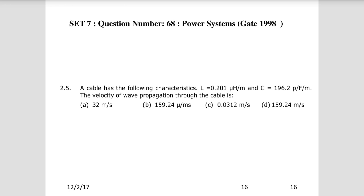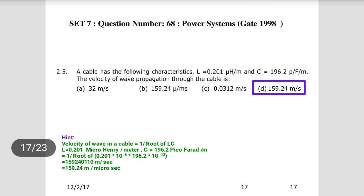Question 8: A cable has given values of inductance L and capacitance C per unit length. Find the velocity of wave propagation through the cable. The velocity of wave propagation equals 1/√(LC). By substituting the given values of L and C, noting that the unit in the question paper has a misprint omitting 'micro', the answer is 159.24 meters per microsecond, so choice D is correct.